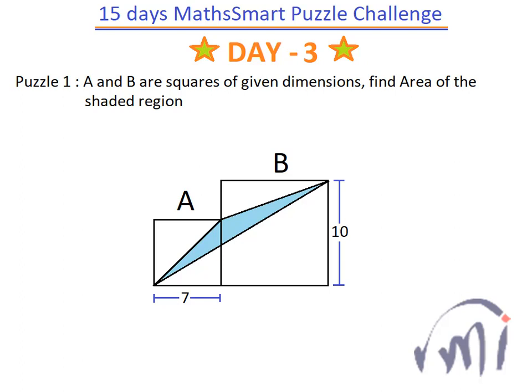Hi, so here we will be solving the first puzzle of day 3. Here A and B are squares of given dimensions. The length of each side of square A is 7, and the length of each side of square B is 10, and we have to find the area of the shaded region. So how do we do that?